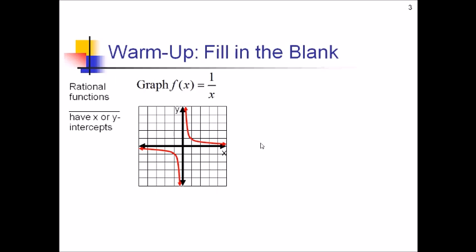Now let's think about what creates these different types of intercepts. For a y-intercept, that's just wherever the graph equals zero for the x value. Here, if you plug in zero, that's not going to give you any kind of value. But let's say this was x minus two in the denominator — then plugging in zero would give you a number. So these can sometimes have y-intercepts. For x-intercepts, you need to find a way to make the numerator zero, by setting y equal to zero and solving. So if there's something like x minus two in the numerator that you can set equal to zero, then you could have an x-intercept. So sometimes they have these intercepts, sometimes they don't.